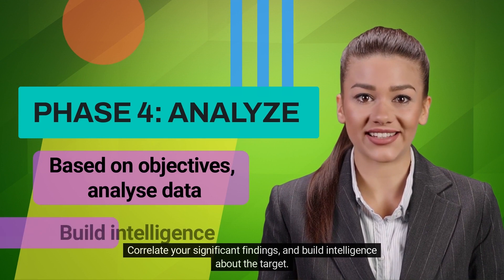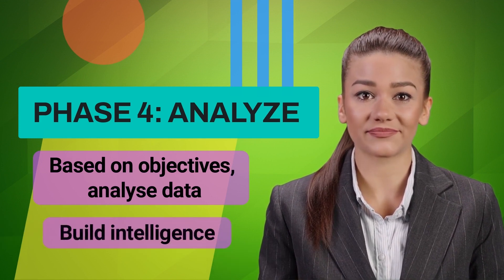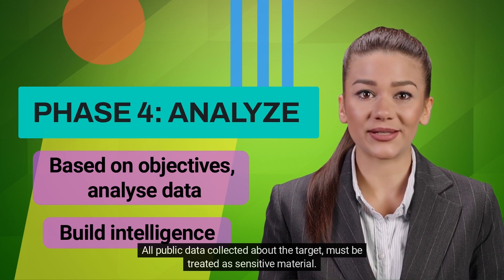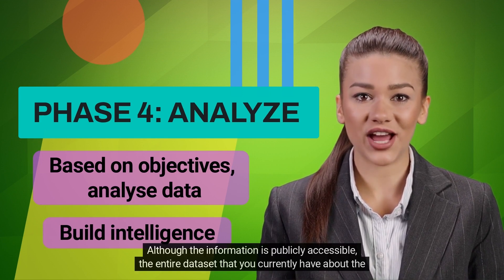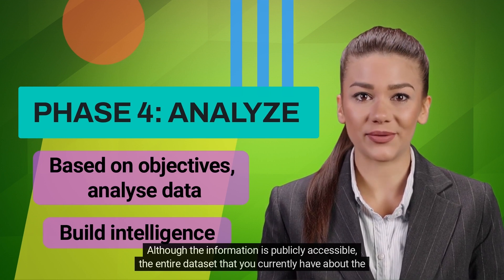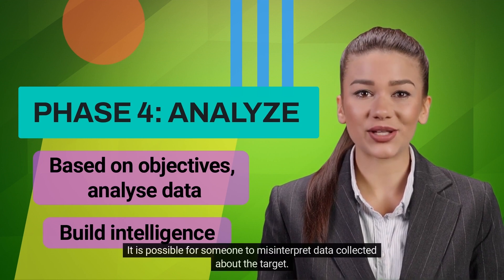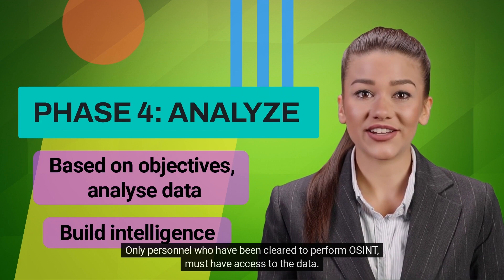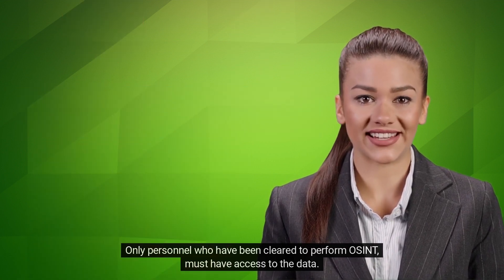Correlate your significant findings and build intelligence about the target. All public data collected about the target must be treated as sensitive material. Although the information is publicly accessible, the entire data set that you currently have about the target is not. It is possible for someone to misinterpret data collected about the target. Only personnel who have been cleared to perform OSINT must have access to the data.